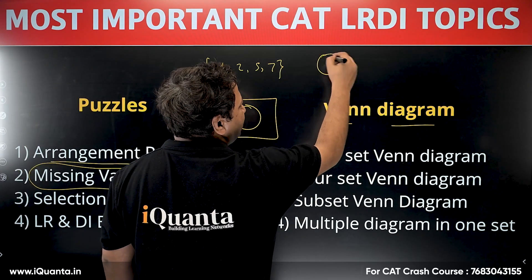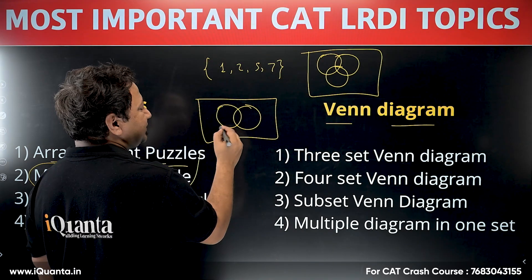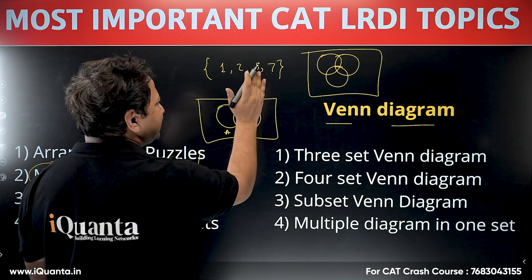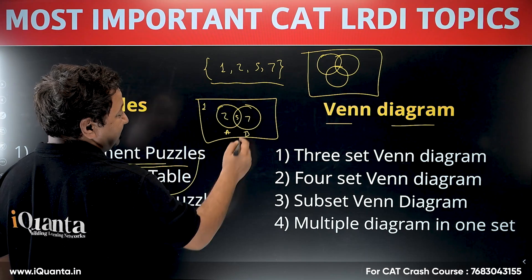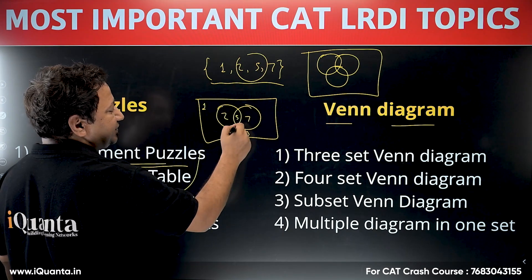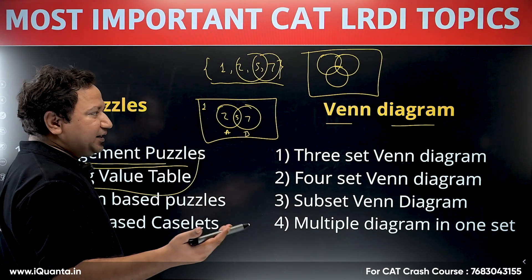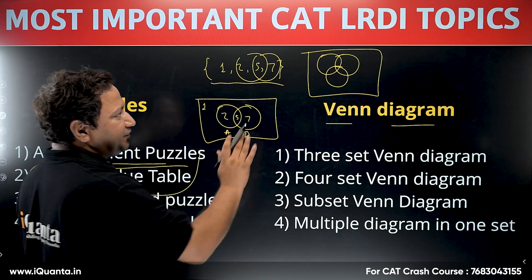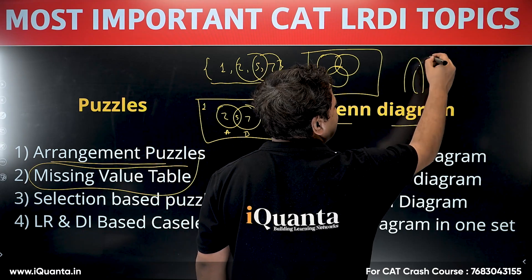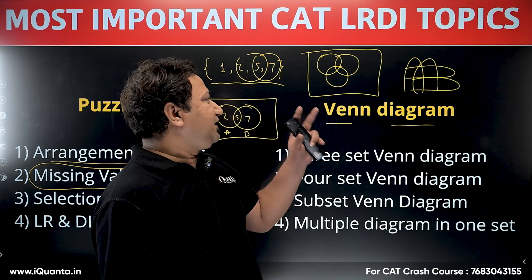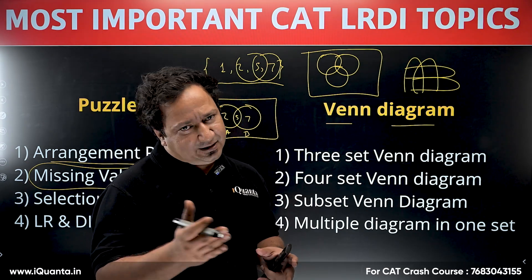In a three-set Venn diagram, the rectangle represents the universal set. For example, with elements one, two, five, and seven: set A contains two and five, set B contains five and seven, and one is not contained in either A or B. Four-set Venn diagrams look quite complex. All the methodology and question types will be covered in LRDI Inception and LRDI 70.